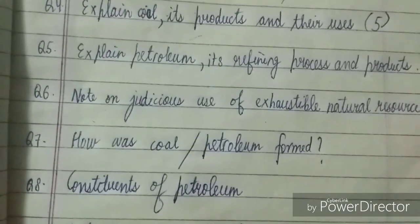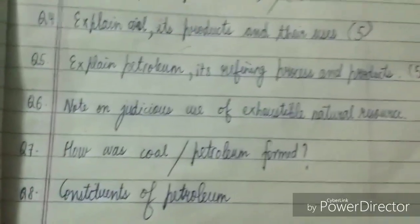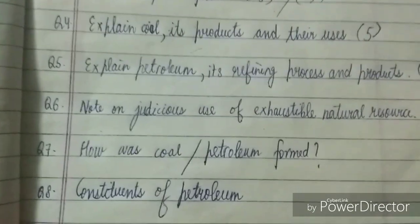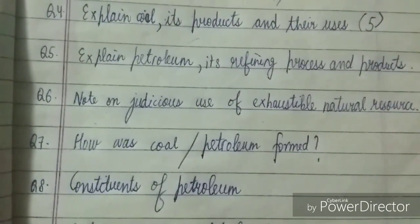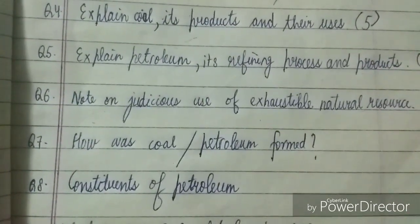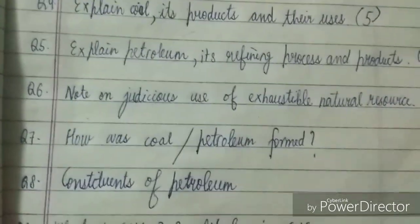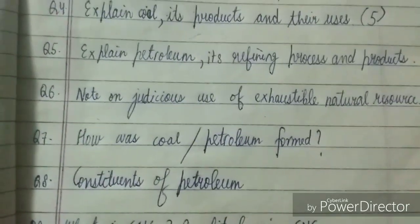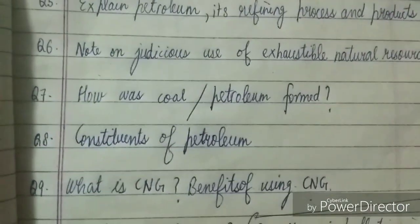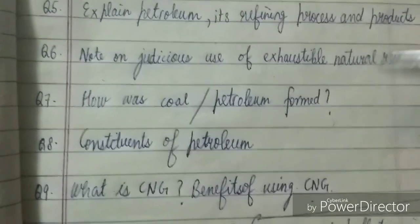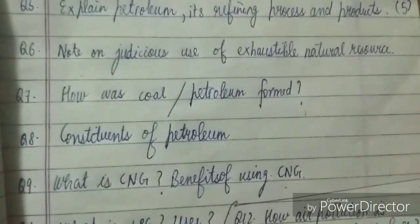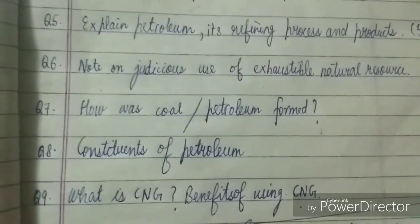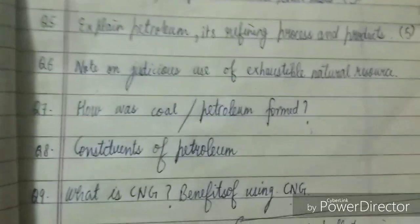After that, write a note on the judicious use of exhaustible natural resources. This is another important question — it can be a value-based or thinking-based question. You can add wide-ranging details about this topic. It would be for three marks, not more than that. How coal or petroleum was formed can also be asked separately or in a combined five-mark question, but only one will be asked.